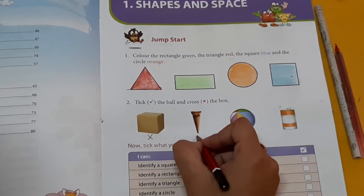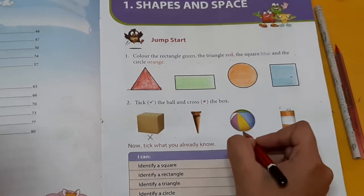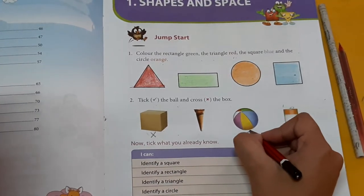Is it ball? No. Is it box? No. Is it ball children? Yes, it is a ball. Then tick.